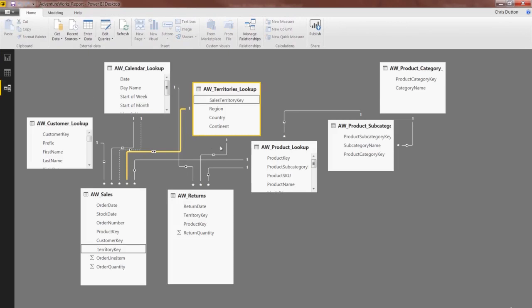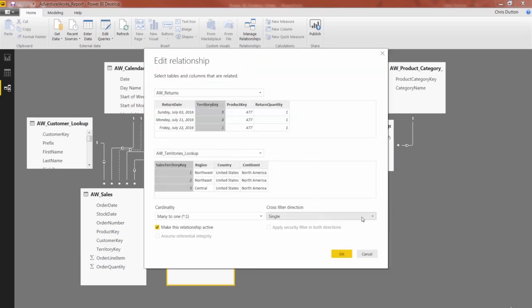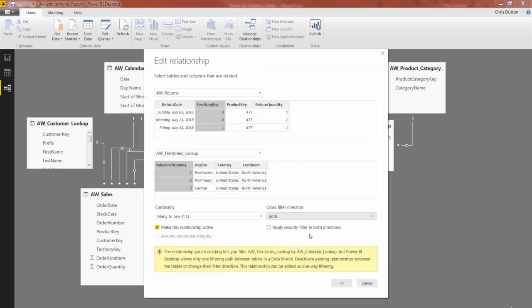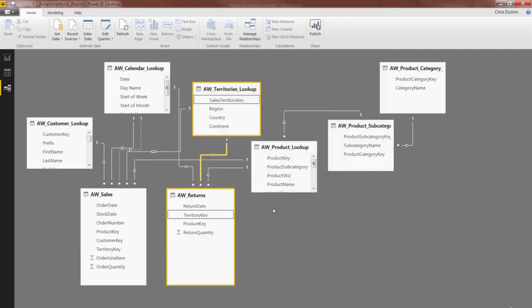So last little demo here. Back to returns. If I go back to the relationship between territories and the returns table and double-click, watch what happens when I try to click both here. I get this error that says you're trying to create an ambiguous relationship. You can only have one filtering path between tables in a data model. So you can't even press OK. You have to deactivate one of those existing relationships or unless at least one of those filters was changed back to single direction.